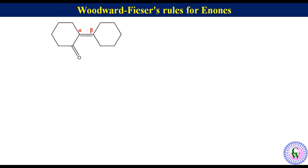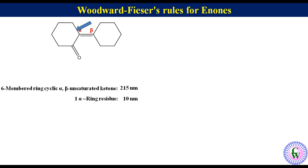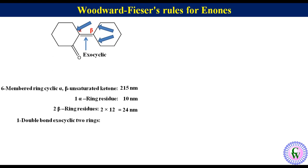In this example, this is the alpha carbon and this is beta. The ketone is a six-membered ring alpha-beta unsaturated, so the base value is 215 nm. There is one ring residue at the alpha position, adding 10 nm. There are two ring residues at the beta position, adding 2 × 12 = 24 nm. This double bond is exocyclic to both rings simultaneously, adding 2 × 5 = 10 nm. Lambda max = 215 + 10 + 24 + 10 = 259 nm.